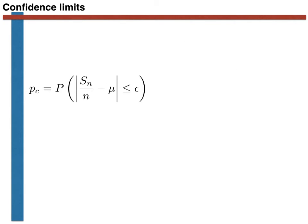To demonstrate how the central limit theorem is used in practice, we are going to calculate a confidence limit. The assumption here is that we have done a set of n experiments. Each of these experiments has generated identically distributed and independent random variables, and we have added all these quantities together and divided by the number of experiments to obtain Sn over n. We are now assuming that by doing so, we have estimated the expectation, mu, for the random variable that underpins our experiments.